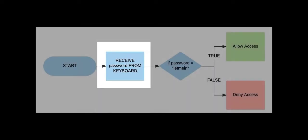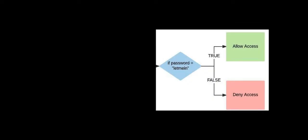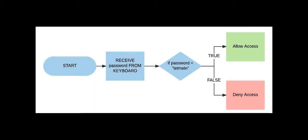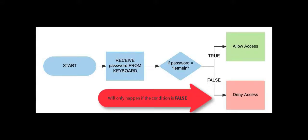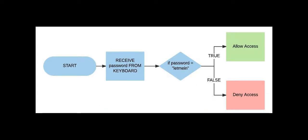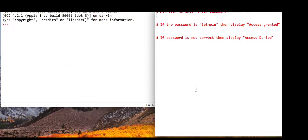The way we can think about that is we first get the password from the keyboard, then we compare if what the user has entered matches the correct password stored in a variable. If it equals 'let me in' then we allow access - if true, allow access; if false, deny access. These can be called conditional statements or branching statements because of the branch for either action.